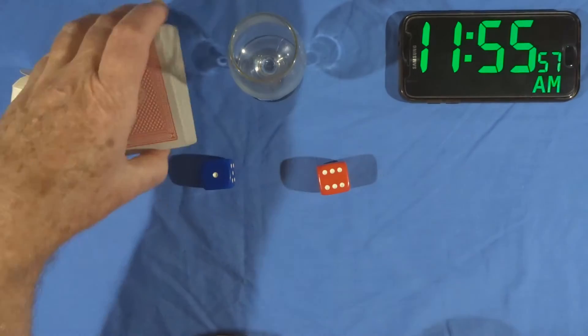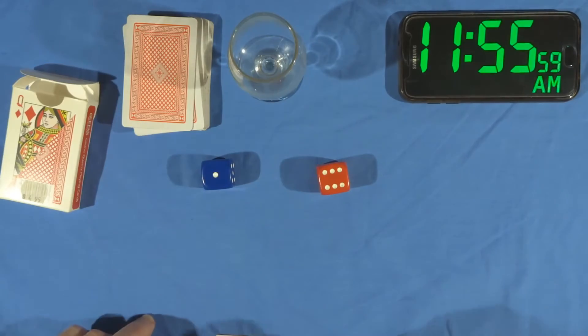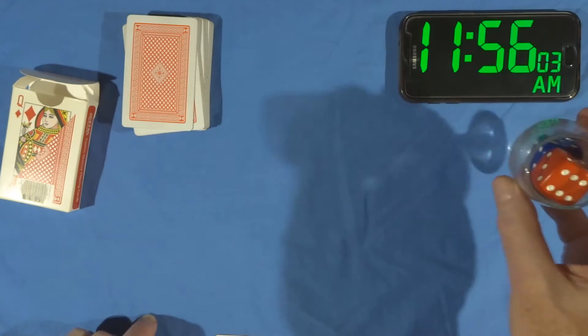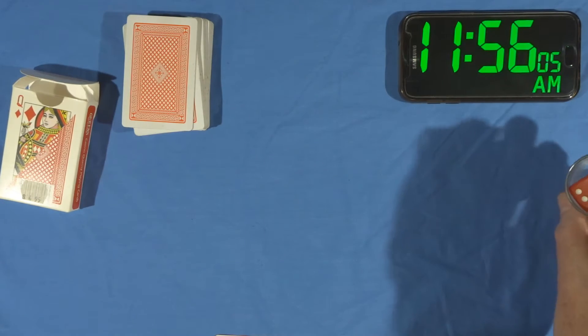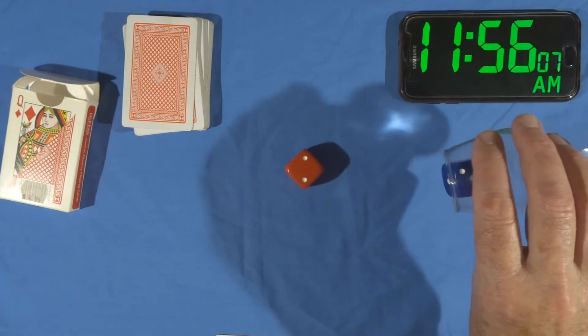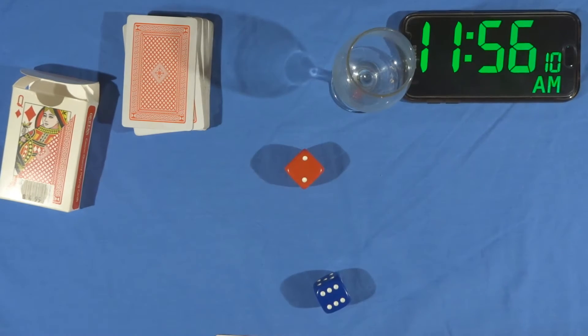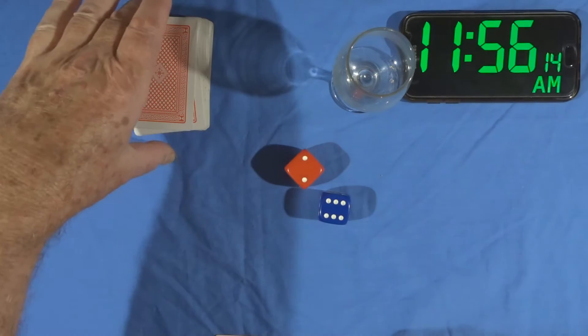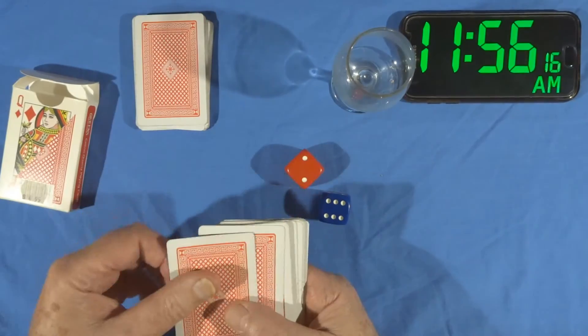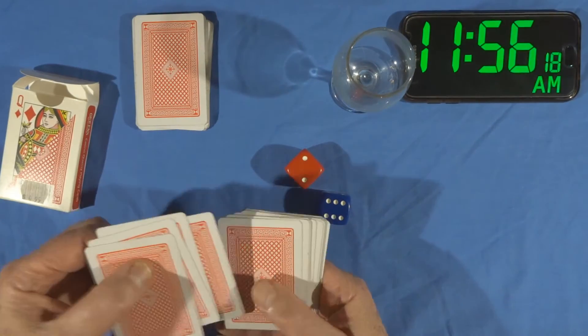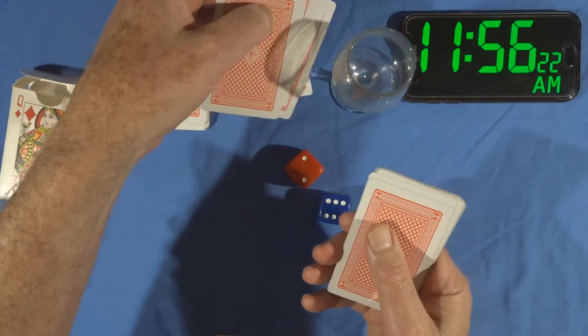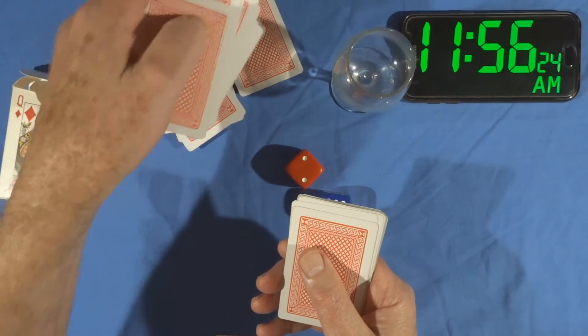Now because I don't use an assistant to select a card I'm going to use these two dice. The total number that comes up will be the card I select from the top to be my prediction card. That's six and two is eight. So we'll count down eight cards: one, two, three, four, five, six, seven, and that's eight. I'll leave that there.